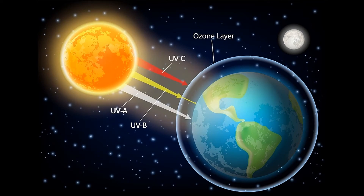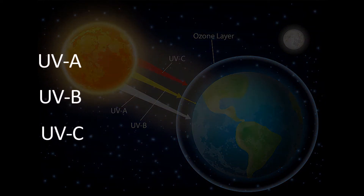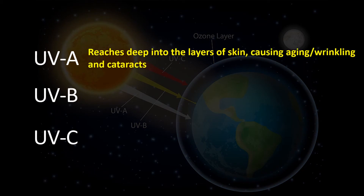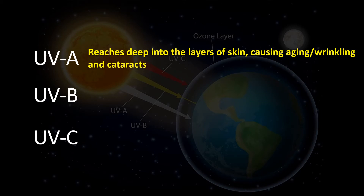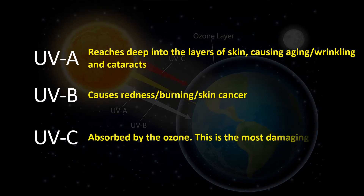You'll notice that the UV light hitting Earth is divided into three categories. UV-A, which reaches deep into the skin causing aging, wrinkles, and cataracts. UV-B, which causes redness, burning, and skin cancer. And UV-C, which is absorbed by the ozone.